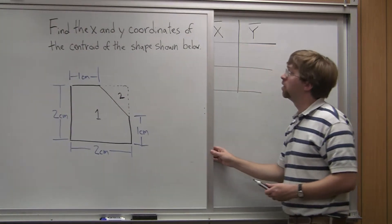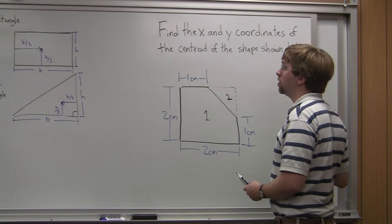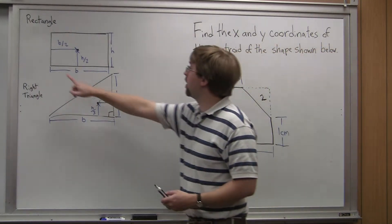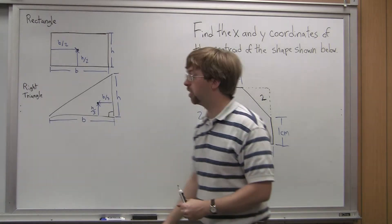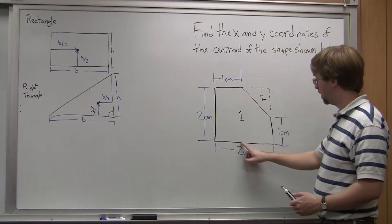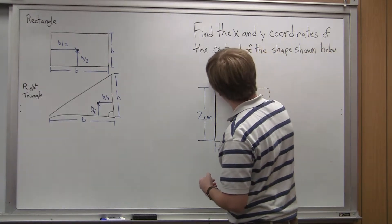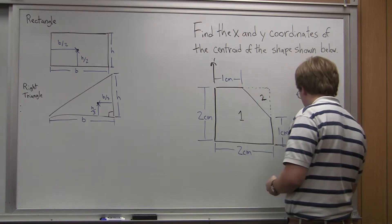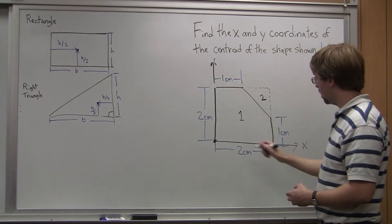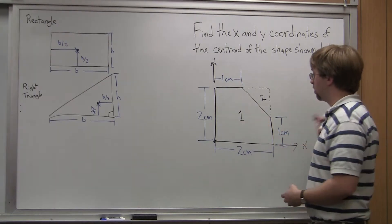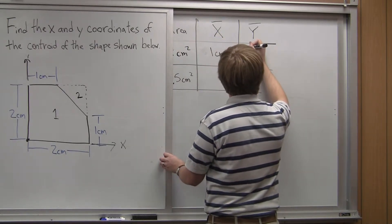Next we need to look at the coordinates of the centroid. For the centroid of the square, one-half of the way along the base and one-half of the way along the height is going to be the center. So the center is one-half of two centimeters — one centimeter over — and one-half of the height — one centimeter up. I'm taking all dimensions relative to my origin point. So the centroid of the square is at one centimeter in x and one centimeter in y.